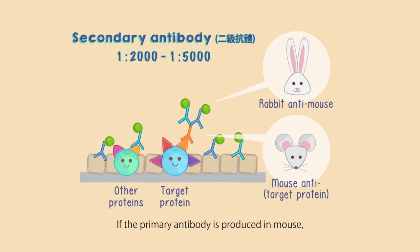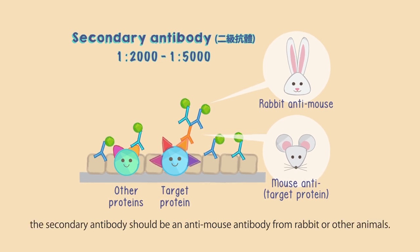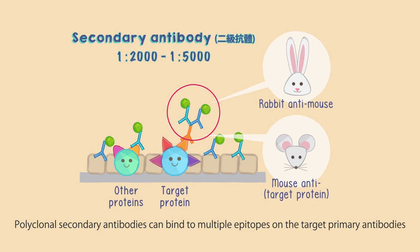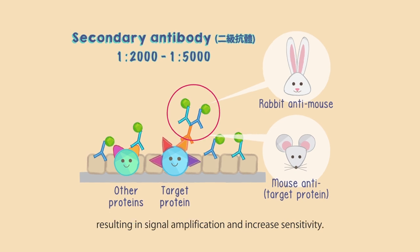The host animals for primary and secondary antibodies should be different to increase specificity. If the primary antibody is produced in mouse, the secondary antibody should be an anti-mouse antibody from rabbit or other animals. Polyclonal secondary antibodies can bind to multiple epitopes on the target primary antibodies, resulting in signal amplification and increased sensitivity.